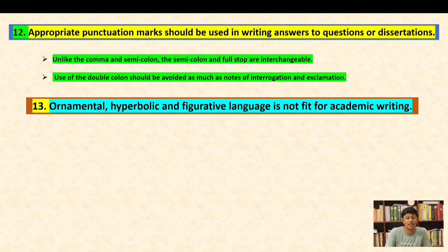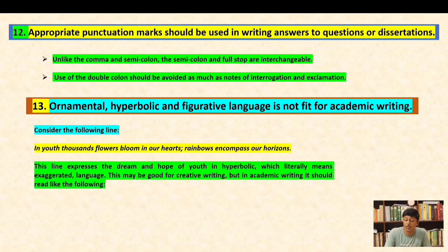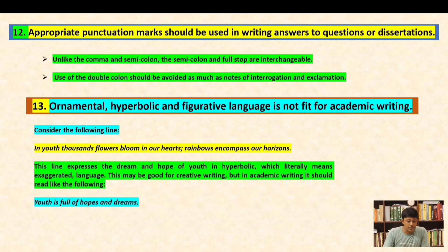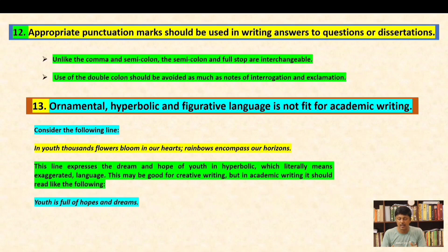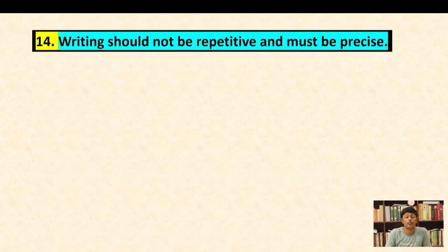Convention thirteen: ornamental, hyperbolic, and figurative language is not fit for academic writing. For example, 'In youth, thousands of flowers bloom in our hearts; rainbows encompass our horizons' uses hyperbolic — that is, exaggerated — language. This may be good for creative writing, but in academic writing it should read simply: 'Youth is full of hopes and dreams.' You have to be precise, clear, and completely devoid of ornamental or figurative language. As a general rule, adverbs like 'very' should also be used sparingly.